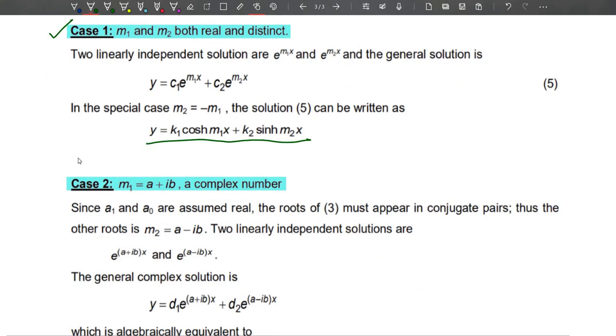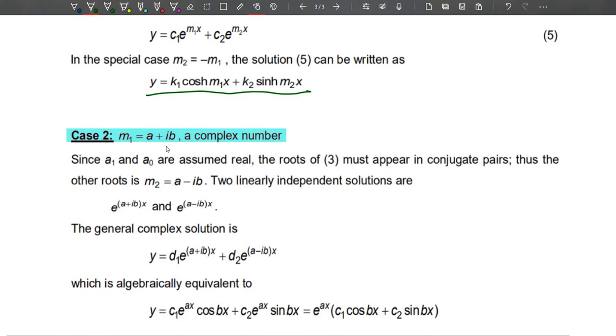Next, Case 2: m_1 equals a plus ib - this is a complex number. Since a_1 and a_0 are assumed to be real numbers, the roots of the characteristic equation must appear in conjugate pairs, so you should get it as m equals a plus or minus bi.